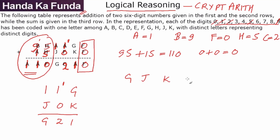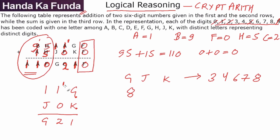So G, J and K need to come from 3, 4, 6, 7 and 8. Let's see if any of them fit. Suppose G is 8 — then 8 plus what gives a carryover of 1 and a units digit of 1? K needs to be 3. Also, 1 plus J equals G means J must be 7. What if G is 7? Then K will be 4, and J is 1 less, so J is 6. This also fits.